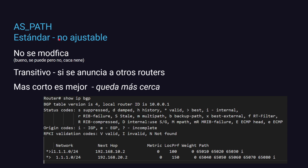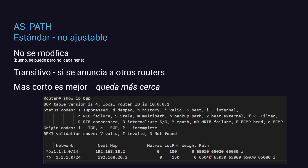El AS-PATH también es un atributo estándar; es el mecanismo de prevención de loops en BGP. No es ajustable normalmente — podés llegar a hacerlo, pero mucho ojo, probablemente no hace falta complicarse la vida. Es transitivo y se anuncia a otros routers. El AS-PATH más corto es mejor, porque queda más cerca. Por ejemplo, si recibís una ruta con AS-PATH de tres sistemas autónomos versus uno de cinco, la de tres va a ser la elegida.